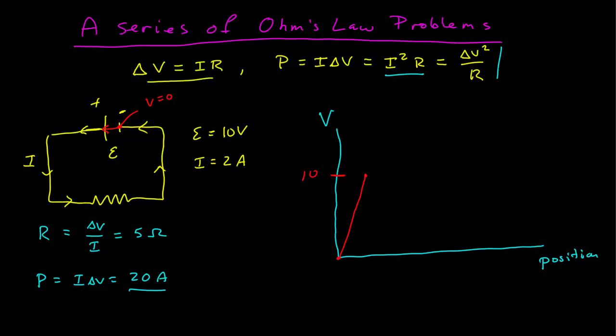Now as I travel around this circuit, let me get a new color. So now as I go around the circuit here this is all conductor, and the voltage is constant everywhere on an ideal conductor. And so for the green part the potential is constant.